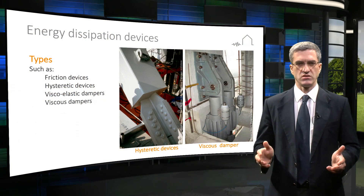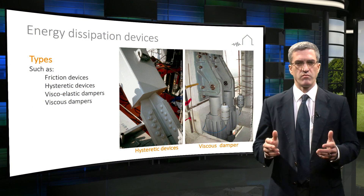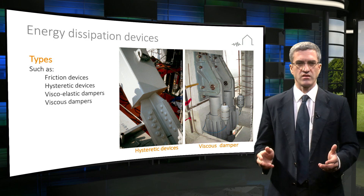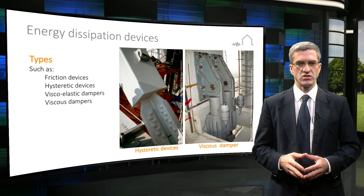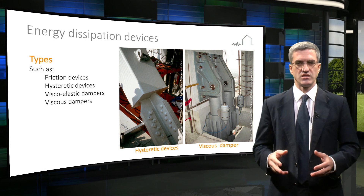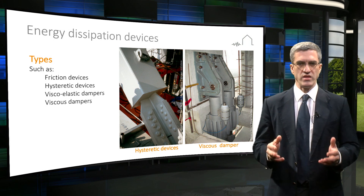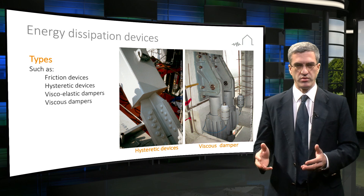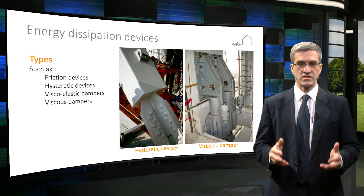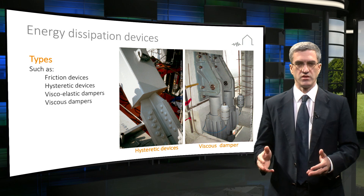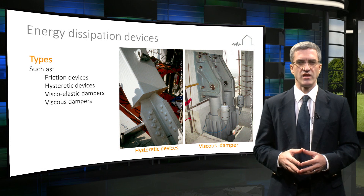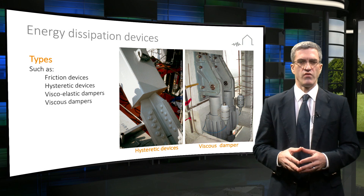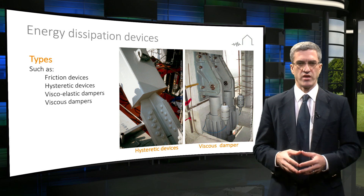Base isolation is one of the most effective means of protecting buildings from seismic damage, and it could be argued that base isolation is similar to seat belts in cars. When needed, they help to protect people, and in this case also protect property. But many other protective systems are available under the general heading of energy dissipation devices.